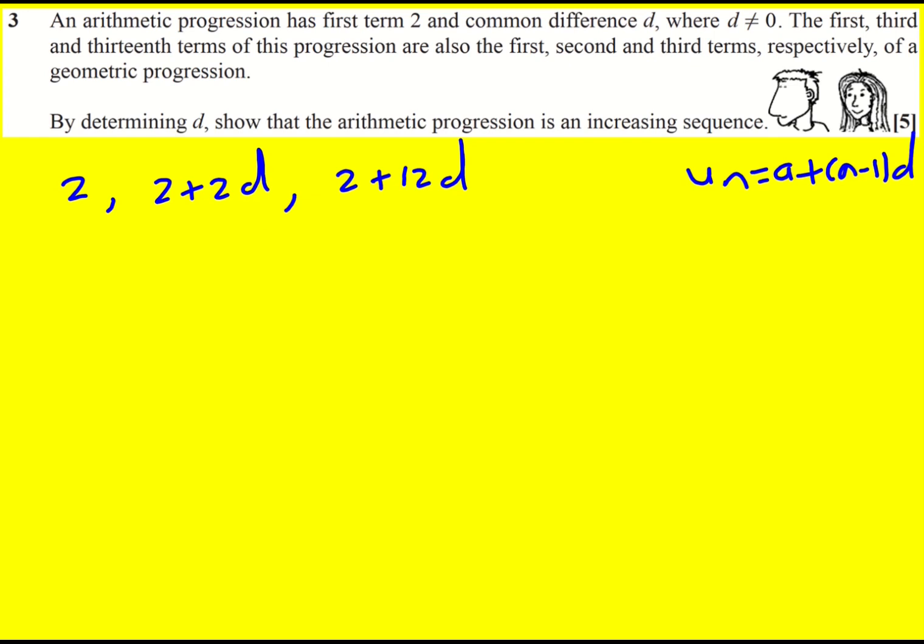So these form the first, second, and third terms of a geometric progression, and hence let's determine d and show that it's an increasing sequence. Right, if this is a geometric sequence then we are timesing by r every time.